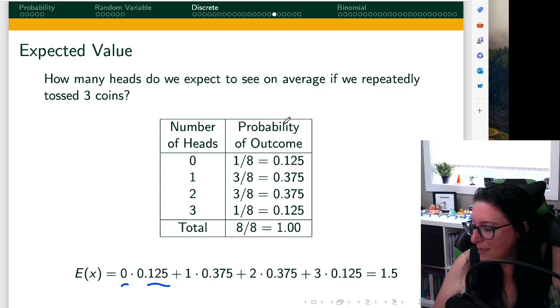Then we have x equals one. The probability that x equals one was 37.5%. Then x equals two, probability was 37.5%. Then the probability that x equals three was 12.5%. To find the expected value, we take x times the probability of x, and then we add them all up.